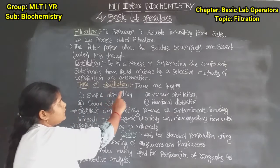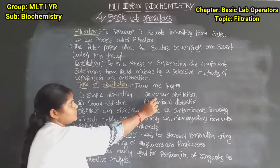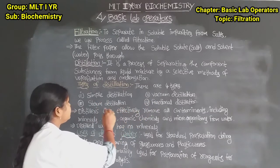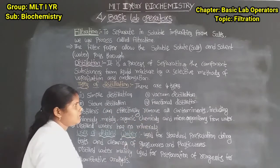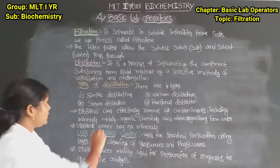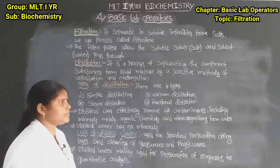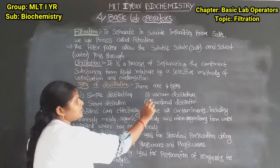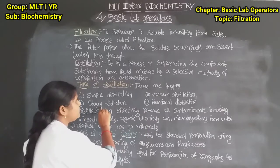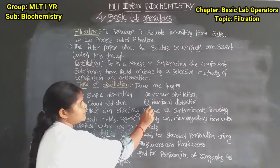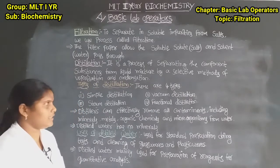Types of distillation: there are four types. First one is simple distillation, second one is vacuum distillation, third one is steam distillation, fourth one is fractional distillation. These are the four types of distillation.